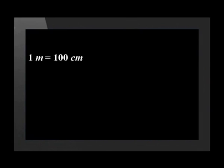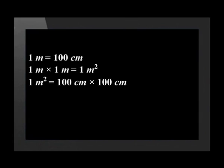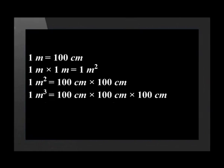Lastly, we are going to go over how to convert cubic metres to cubic centimetres. There are one hundred centimetres in a metre. One metre squared is equal to one metre times one metre. Therefore, one metre squared is equal to one hundred centimetres times one hundred centimetres. This means that one metre cubed is equal to one hundred centimetres times one hundred centimetres times one hundred centimetres. This equals one million cubic centimetres.